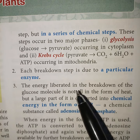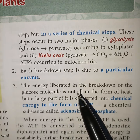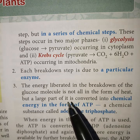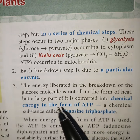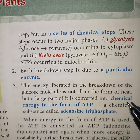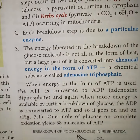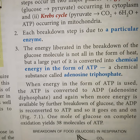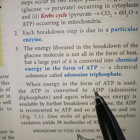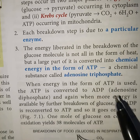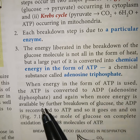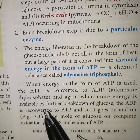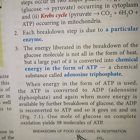Third characteristic: the energy liberated in the breakdown of the glucose molecule is not all released in the form of heat, but a large part of it is converted into chemical energy in the form of ATP — adenosine triphosphate. When energy in the form of ATP is used, the ATP is converted into ADP. ATP contains three phosphates; when one phosphate is utilized to carry out different functions, ATP converts into ADP. Again, when more energy is available by further breakdown of glucose, the ADP is re-converted into ATP.